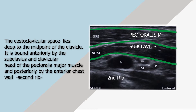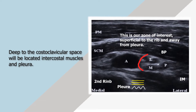The costoclavicular space is bound anteriorly by the subclavius and clavicular head of the pectoralis major muscle, and posteriorly by the anterior chest wall and second rib. Deep to the costoclavicular space will be located intercostal muscles and pleura.